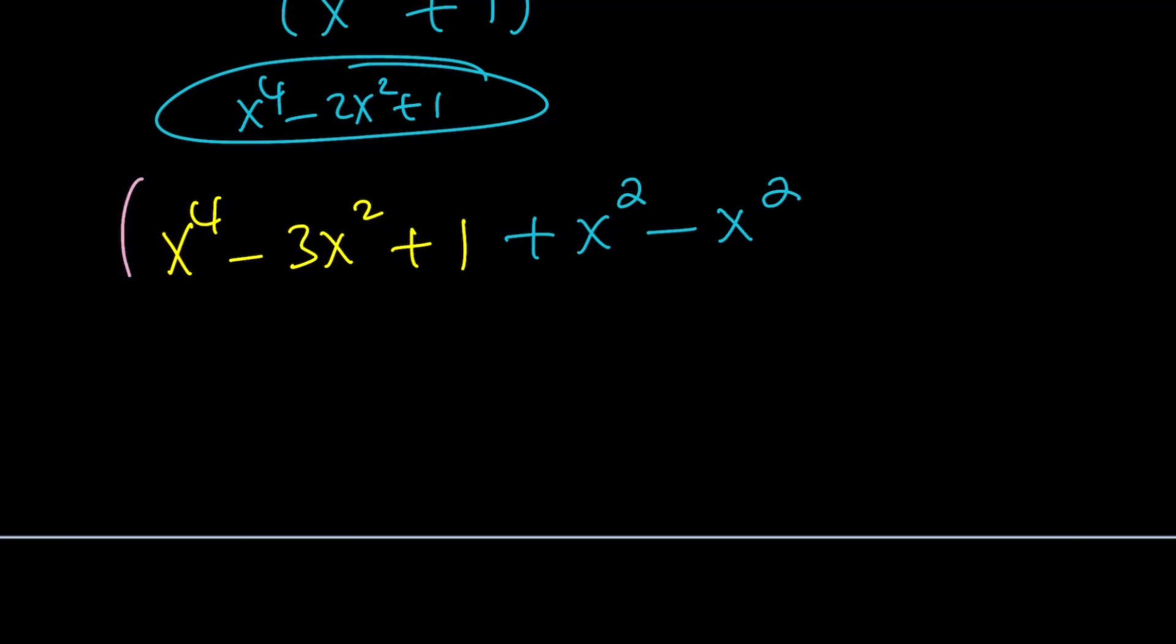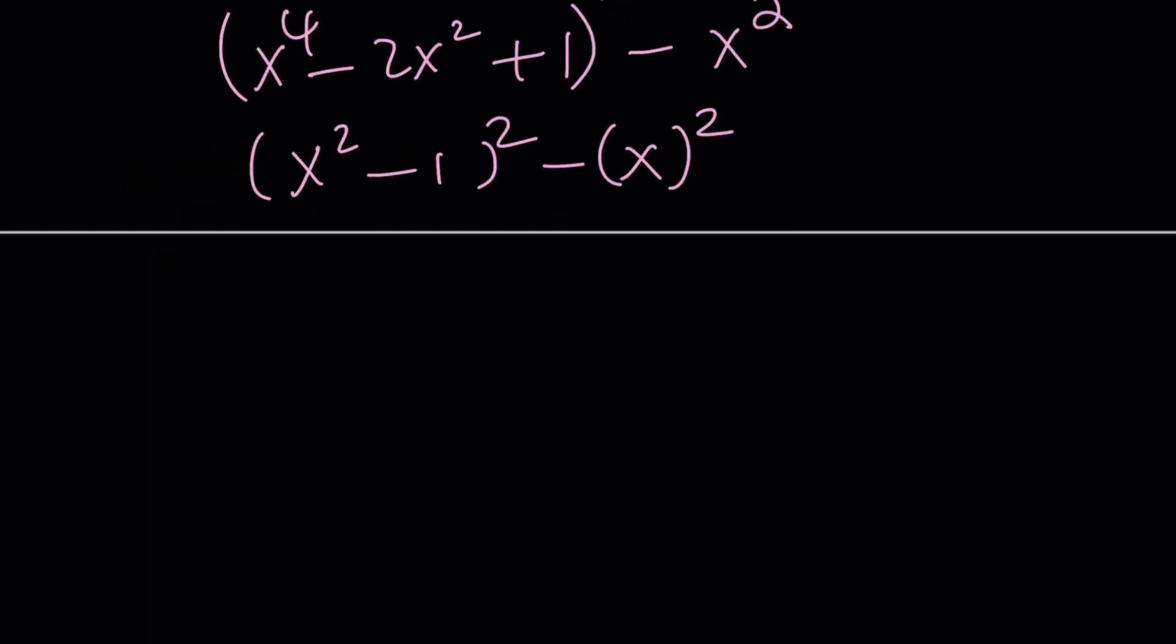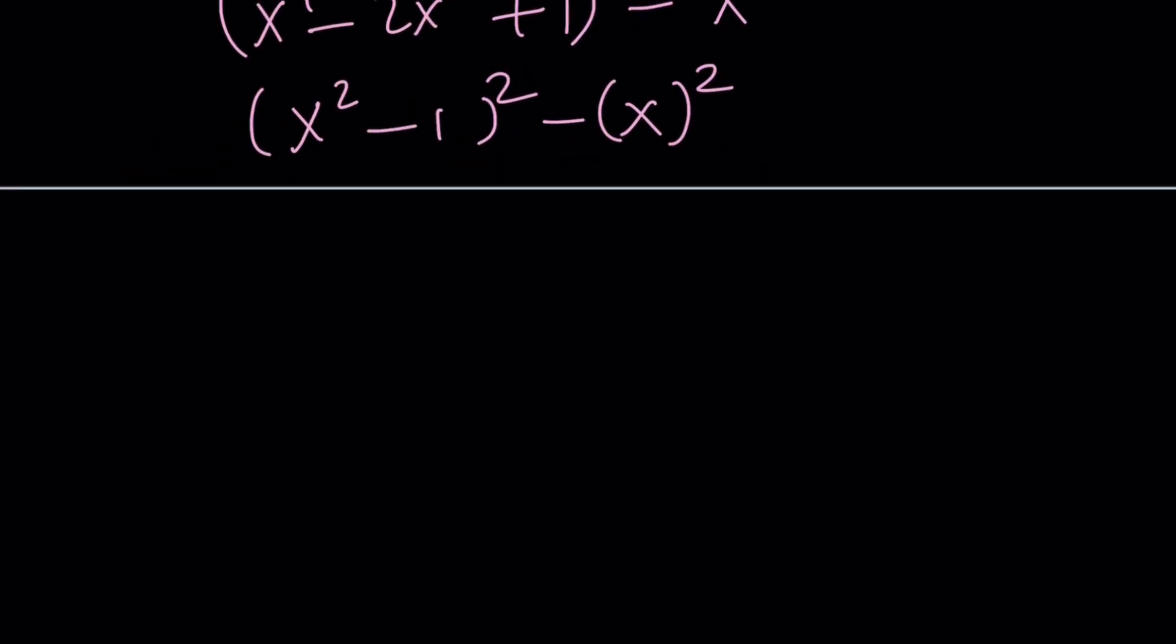Okay. So this time, these terms are going to make a perfect square. x to the fourth minus 2x squared plus 1. And guess what? We are subtracting x squared from this. And x squared is a perfect square. And that is just perfect. So we can write this as x squared minus 1 squared minus x squared. You don't have to put it in parentheses. Just for emphasis. And then, from difference of two squares. Remember the formula? x squared minus 1 plus x. And then, x squared minus 1 minus x.